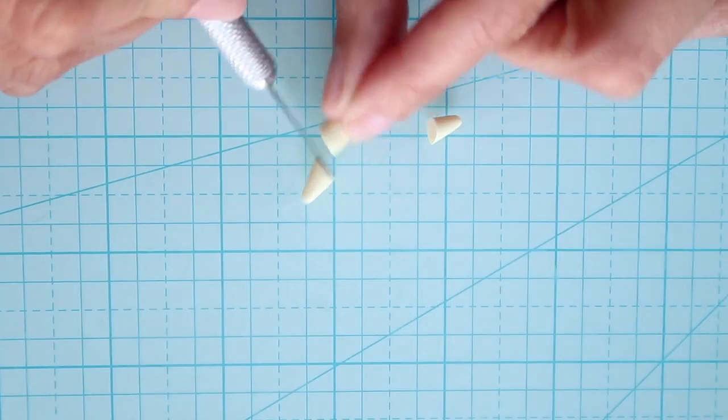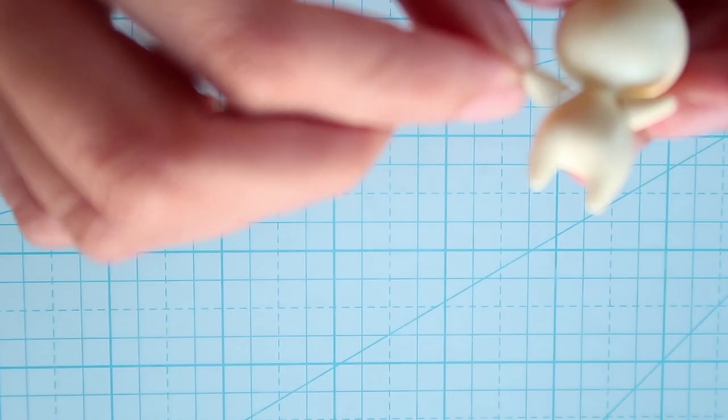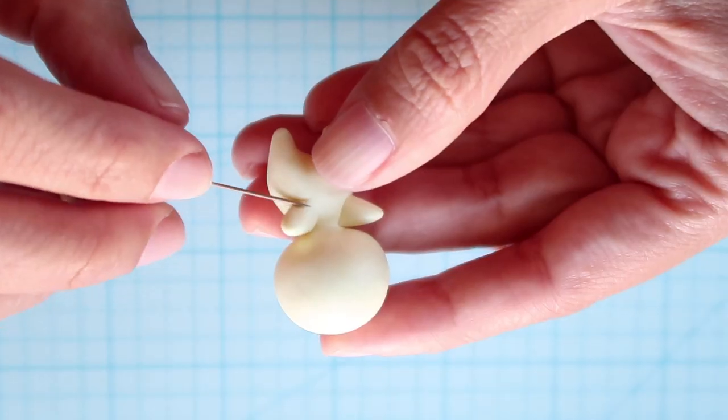Next roll a log of clay so that the tips are pointy for the arms and attach them onto the body and secure with a needle tool.